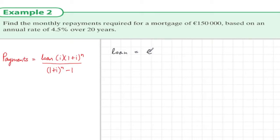Okay, when we write down what we have, the loan is €150,000. We also know that the number of repayments is 20 times 12, so n is equal to 240.